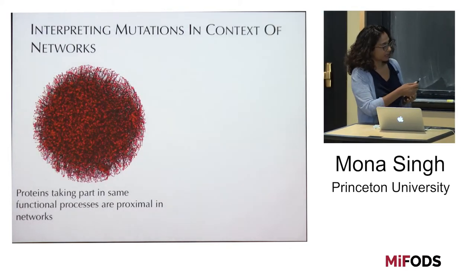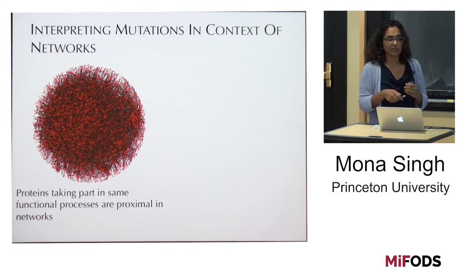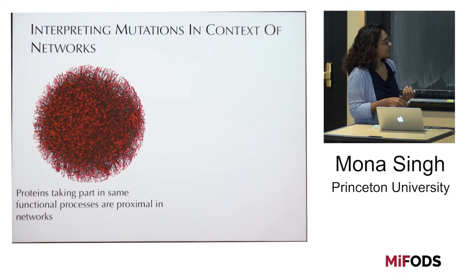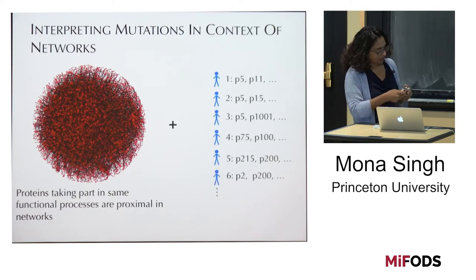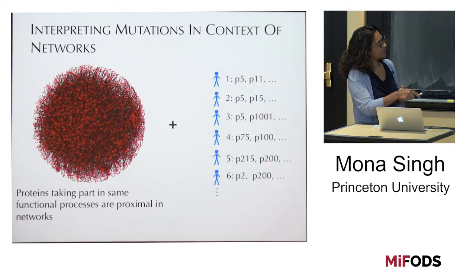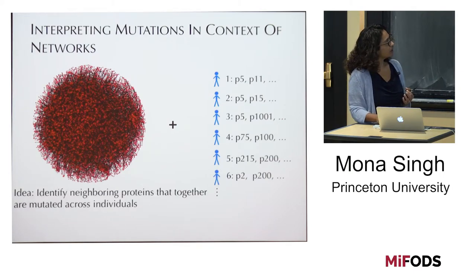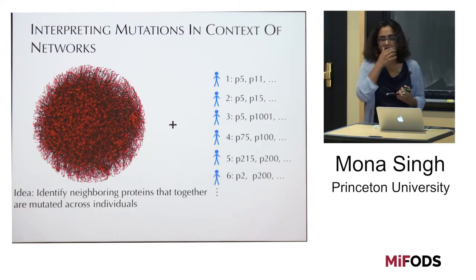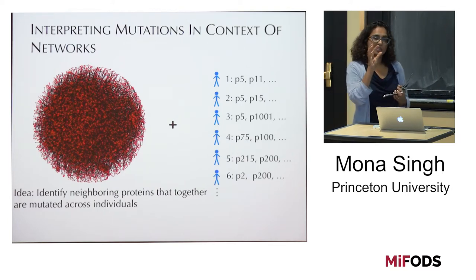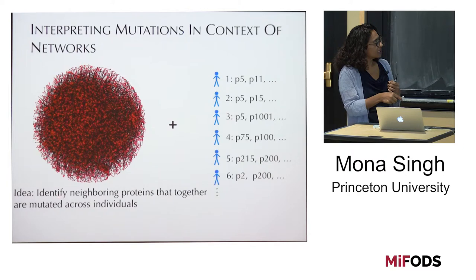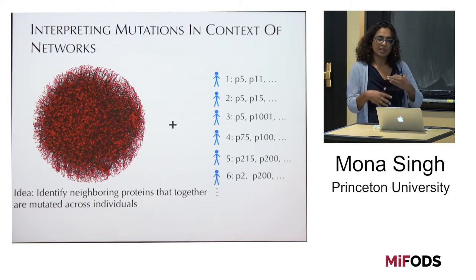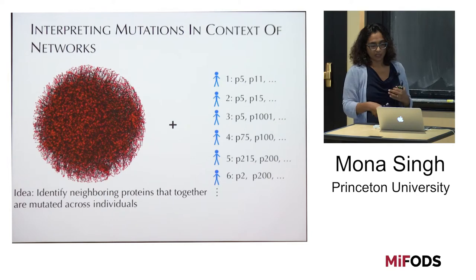We're going to look at a protein interaction network — a more typical view than my cartoon — where proteins that take part in the same functional processes tend to be within regions in the network. We look at our tumor data across individuals, list where they have mutations, and map this information onto the network. Our idea is: if you can affect functionality by affecting any of the proteins that participate in it, maybe we can use the network to identify neighboring proteins that individually aren't that frequently mutated, but together are mutated frequently across individuals.